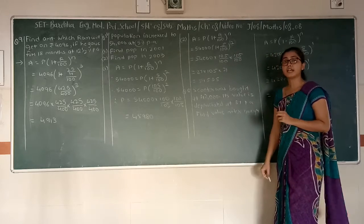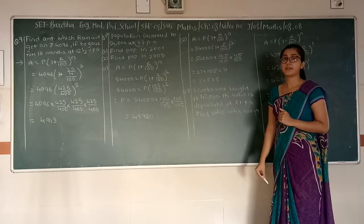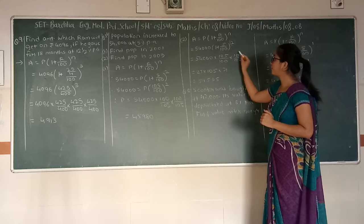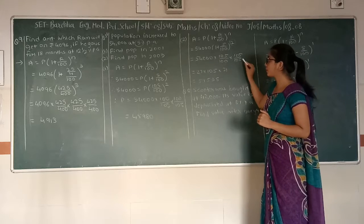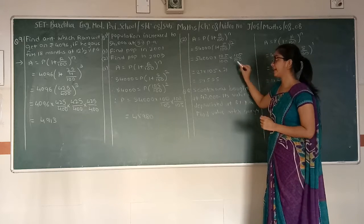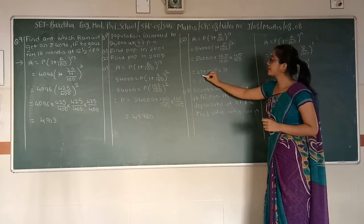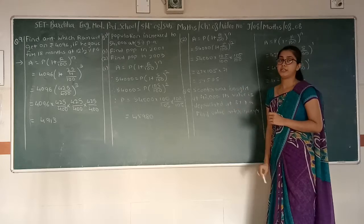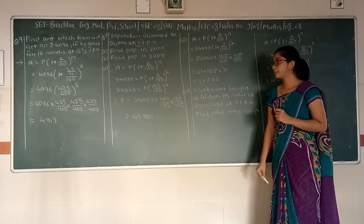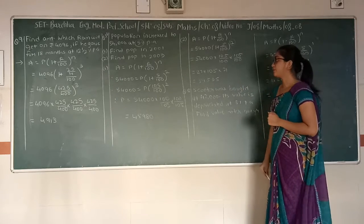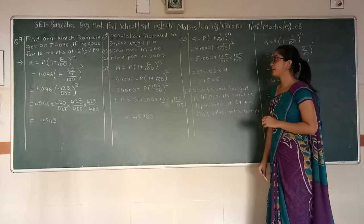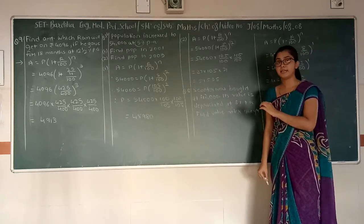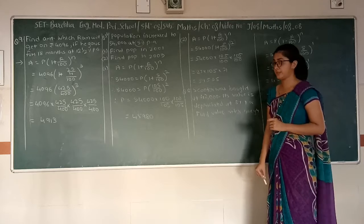We write 2 times 105 upon 100. Now if we solve this equation we get 105 upon 100 raise to 2, and the answer will be 59,535.